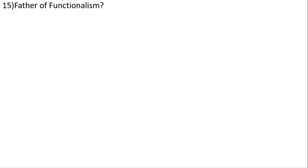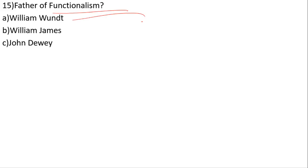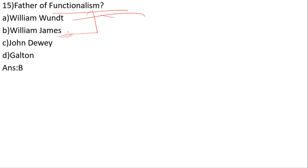Who is the father of functionalism? Options: William Wundt, William James, John Dewey, Galton. The correct answer is option B — William James is the father of functionalism. Note: William James is also the father of American psychology.